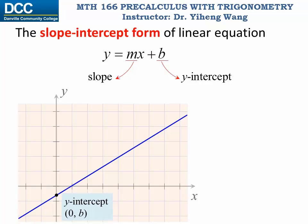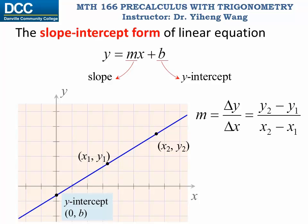Once again, for any two arbitrary distinct points on this line, x1, y1, and x2, y2, it is always true that the slope m equals to delta y over delta x. The difference between the y coordinates over the difference between the x coordinates. It can also be written this way, but not this way. You need to make sure that the order of subtractions is consistent for the numerator and the denominator.